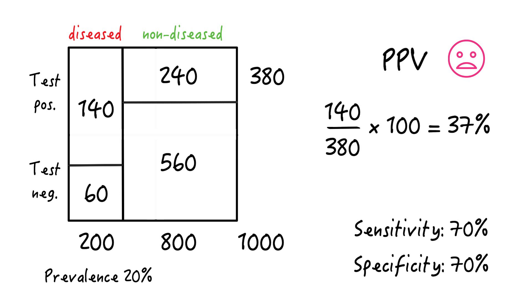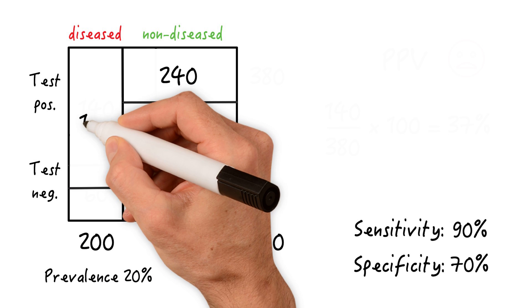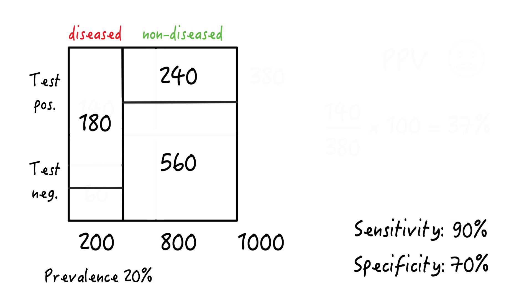Now let's see what happens to the positive predictive value if we change sensitivity to, let's say, 90%. So now, out of the 200 diseased, we're going to pick up 180 people and we'll miss 20.